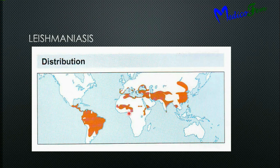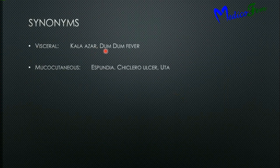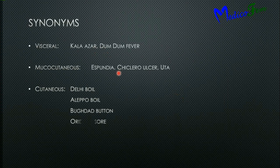This is the world map showing distribution of leishmaniasis — South America, Brazil, some parts of India, China, and South East Asia are affected. Visceral leishmaniasis is also known as Kala-azar and Dumdum fever. Mucocutaneous leishmaniasis is also known as Chilero Ulcer UTA. Cutaneous leishmaniasis is also known as Delhi Boil, Aleppo Boil, Baghdad Button, Oriental Sore, and Pin Boyas.